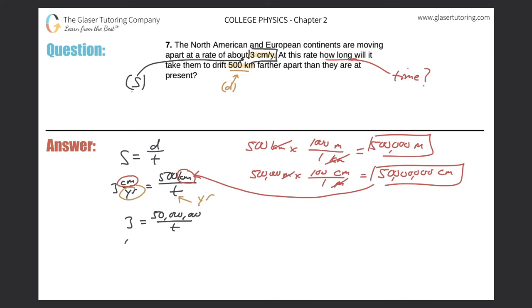So t, just doing a little cross multiplication, t will be equal to 50 million over three. And then just take out your calculator, plug that in. So 50 million divided by three.